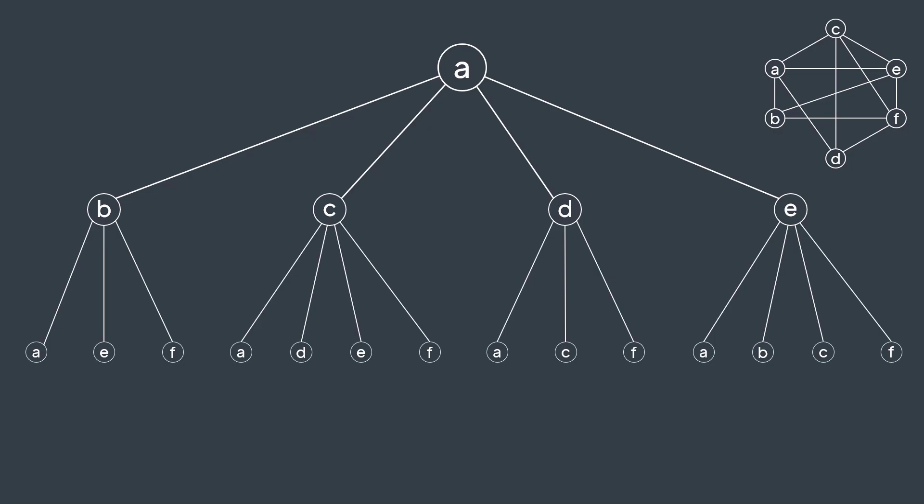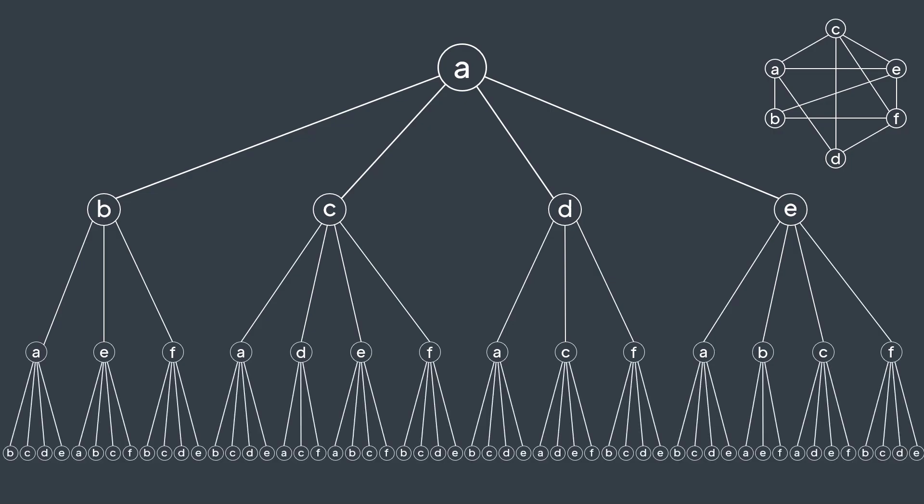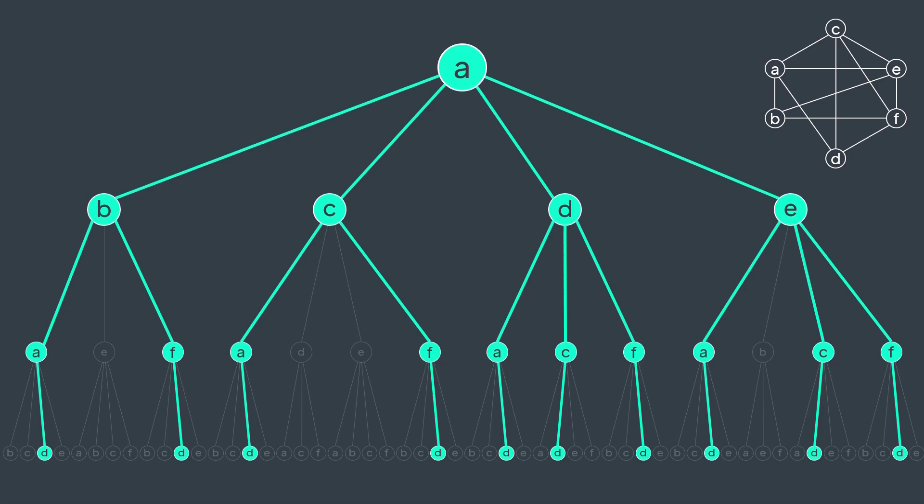Now again, for each node, we try all destinations it can go to. For example, a can go to b, c, d and e. We got all paths of length three that start from a. We count ones that end in d. We get a total of 10.